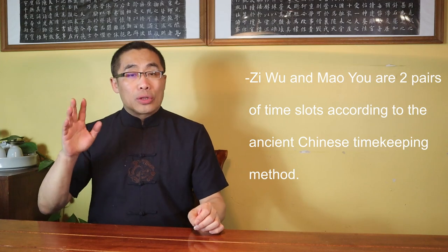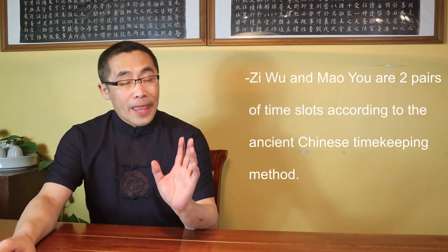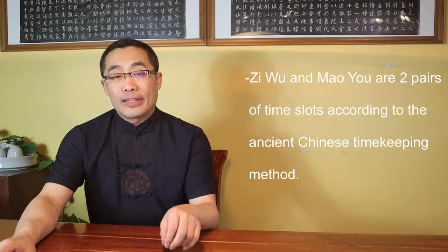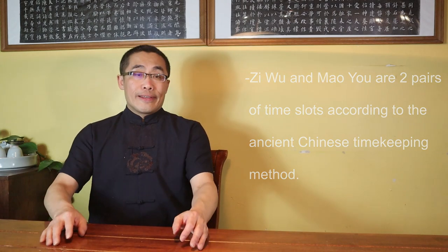Takeaways: Zhou Tian means Cycle of the Universe. The Ancient Chinese divided a day into 12 parts, with each part representing 2 hours in modern timekeeping. Zi Wu and Mao Yu are two pairs of time slots according to the ancient Chinese timekeeping method. Xiu Dao practitioners use these two pairs of time slots to indicate the different directions of energy movements.